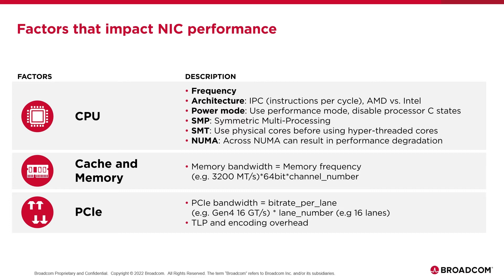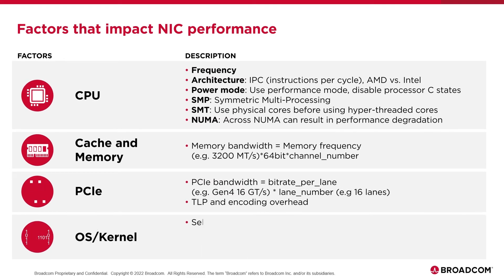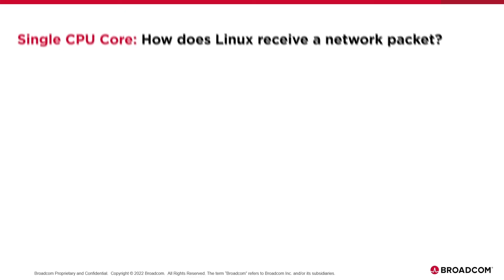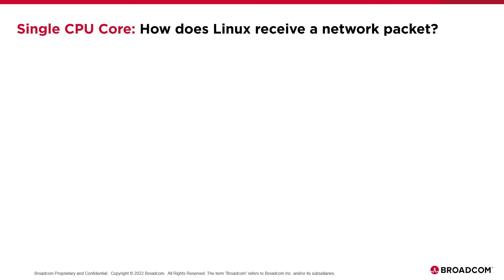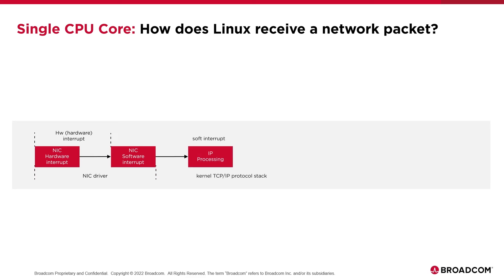You will not be able to achieve line rate if line rate requires more data than the PCIe bandwidth can push. There are also a variety of OS and kernel level tunings we'll discuss, outlined in more depth in the performance tuning guide. To give a high-level look at how Linux receives a network packet: it goes through a number of different interrupts, both on the hardware side and the kernel side. When the NIC receives a packet, it generates a hardware interrupt caught by the NIC driver, which then triggers a software interrupt to the kernel to start processing that packet through the kernel's TCP/IP protocol stack.